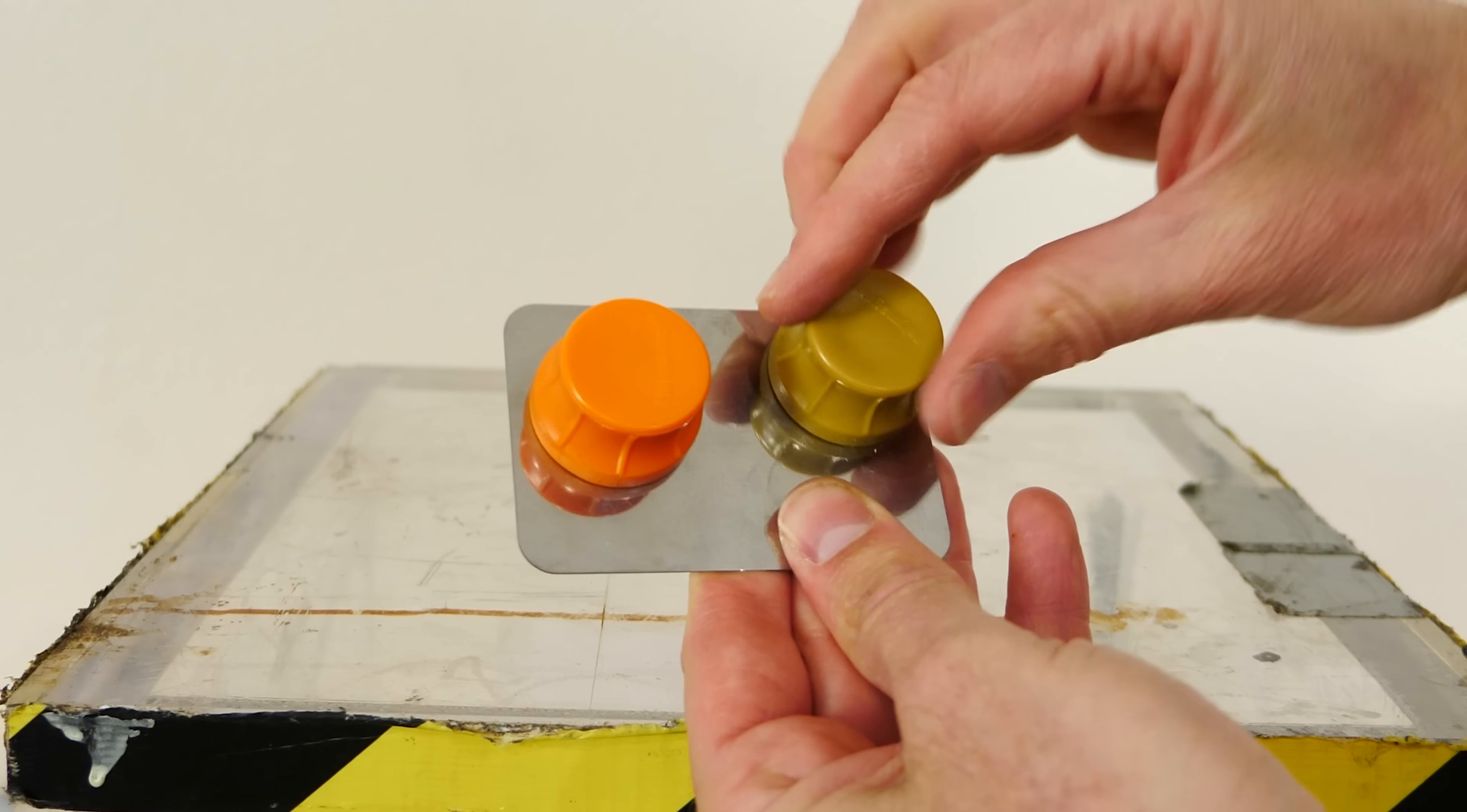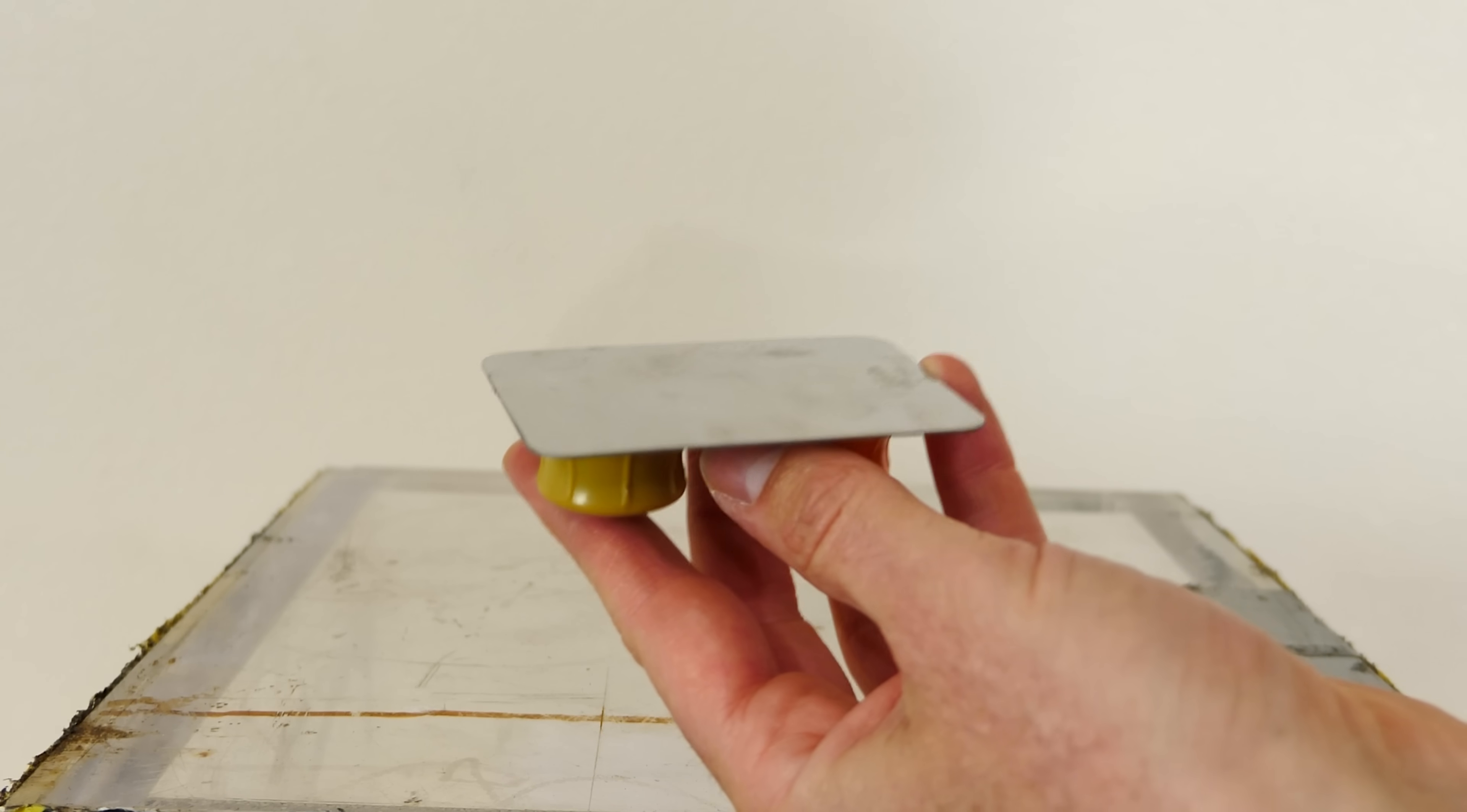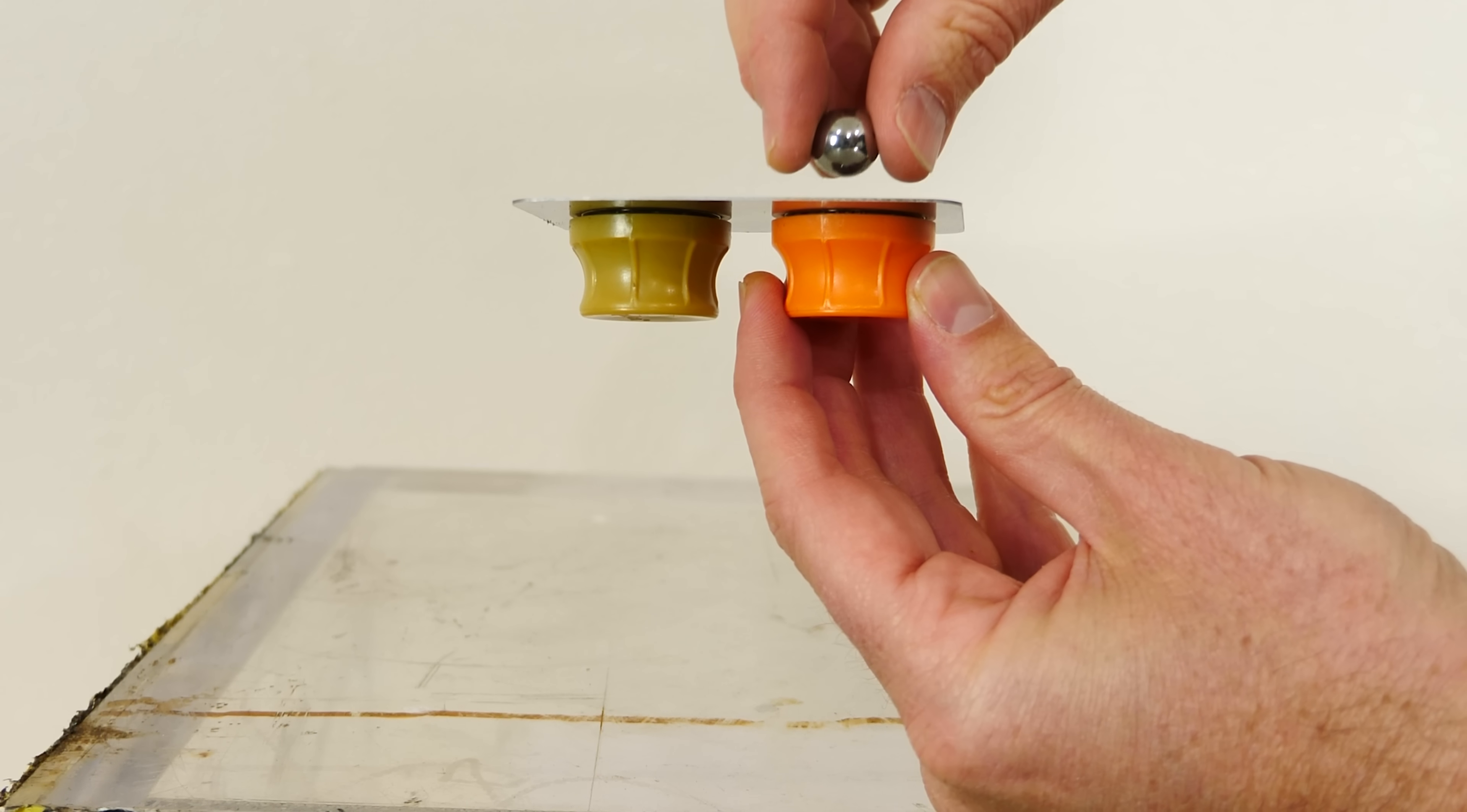So they both stick to this piece of metal really strongly. Now this is pretty thin so you can imagine that we're going to get some magnetic field leaking through it. Now I can test this with a steel ball here. You can see that it's still attracted to the magnet through it.